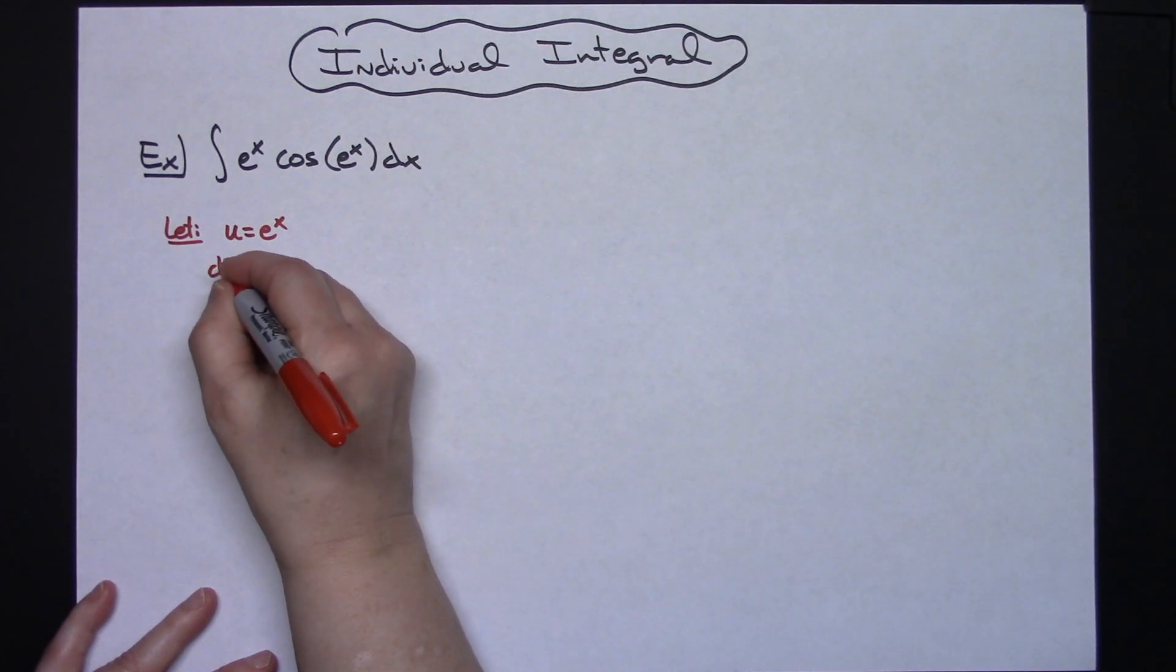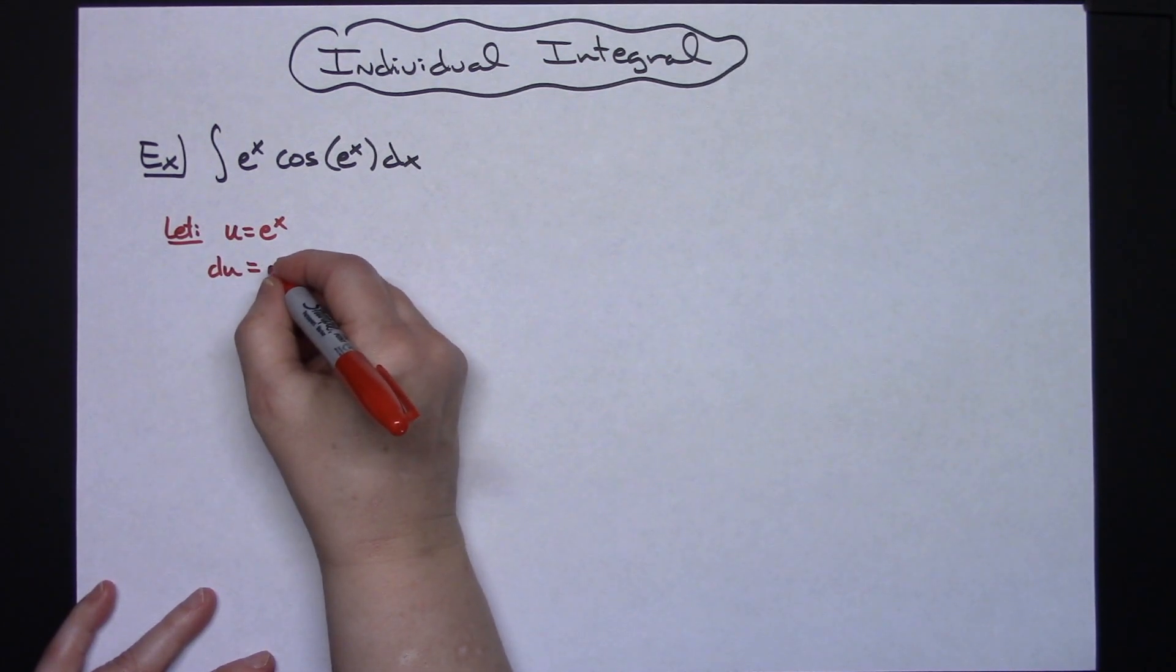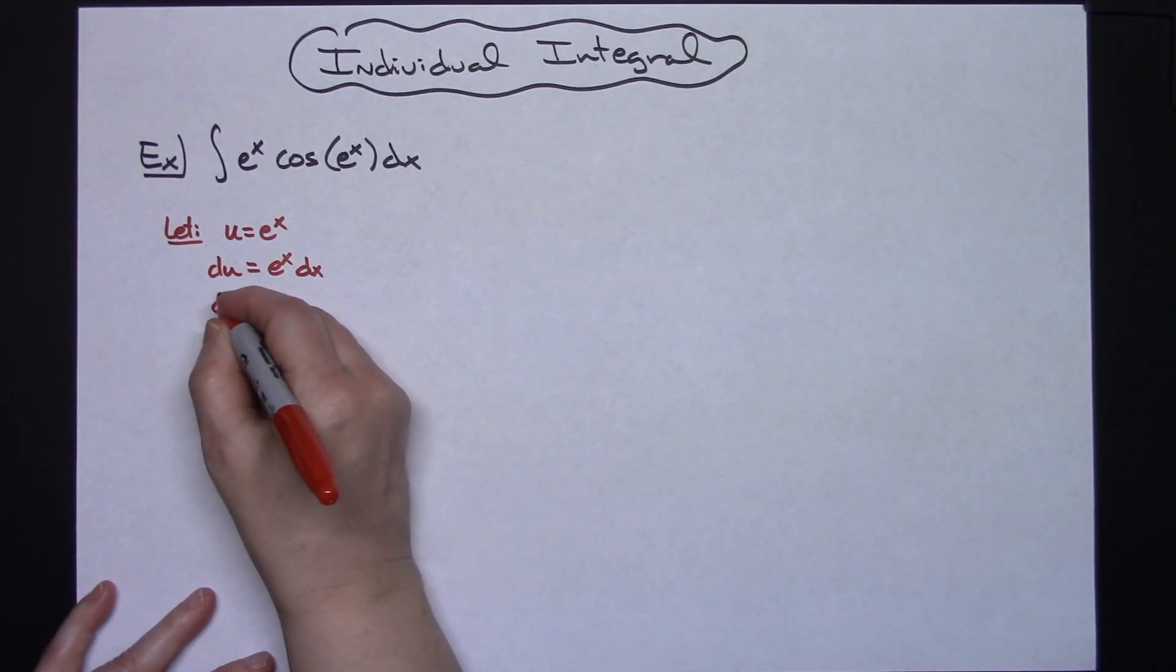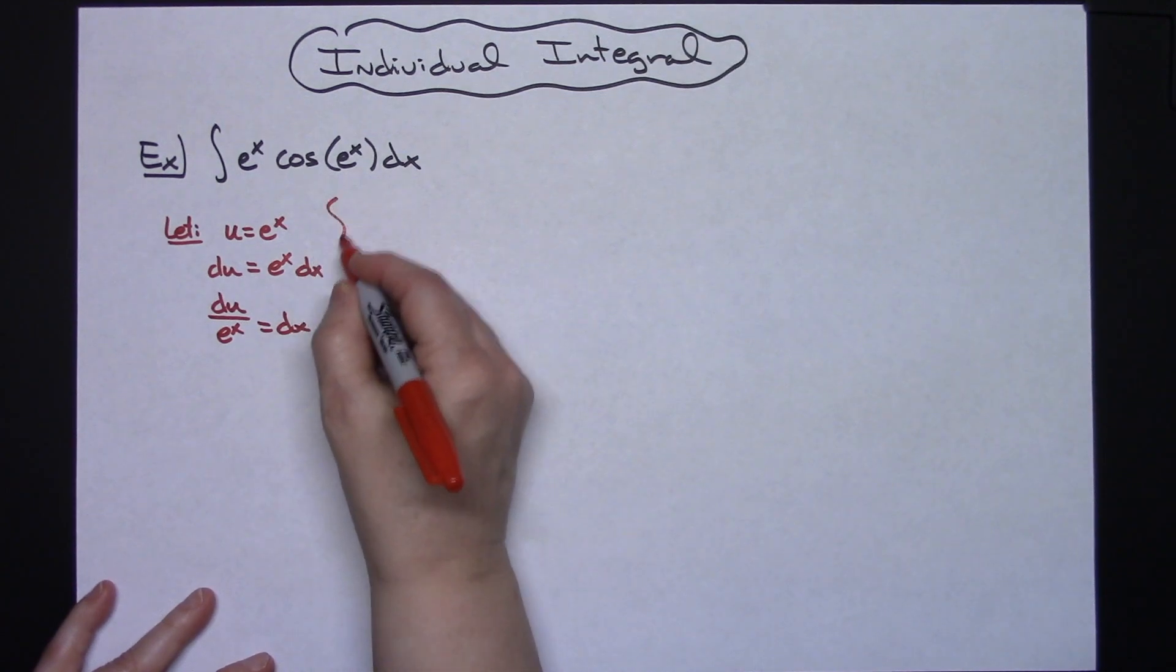I'm going to take the derivative of both sides, du is equal to e to the x dx. I'm going to go ahead and solve all the way down for dx, so I'll have du over e to the x is equal to my dx.